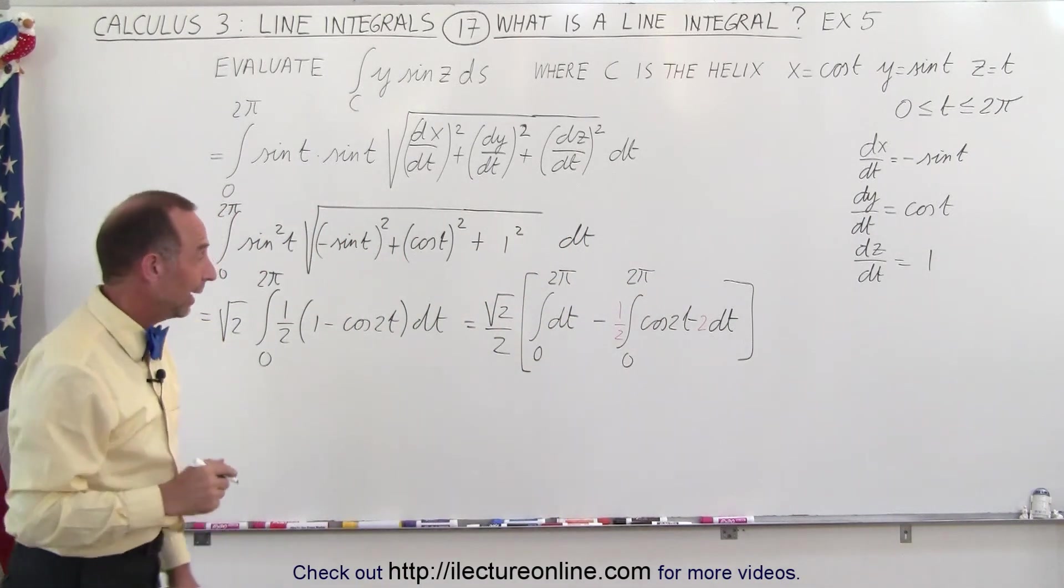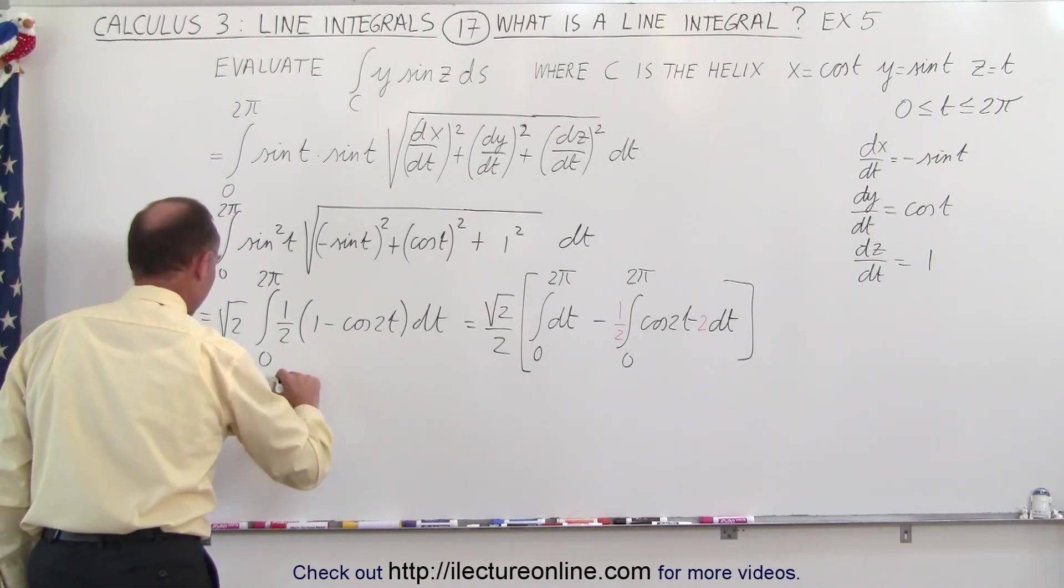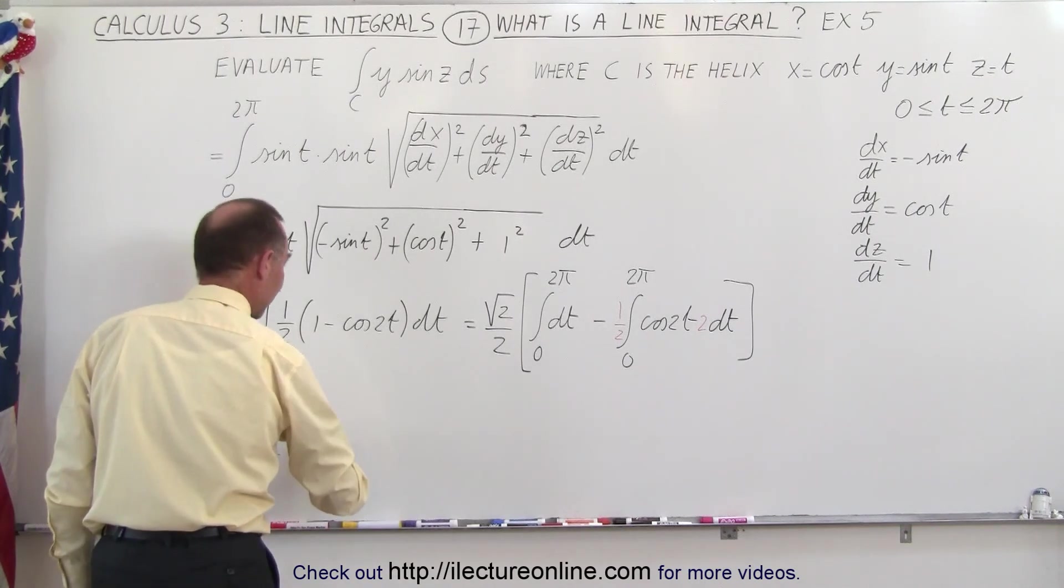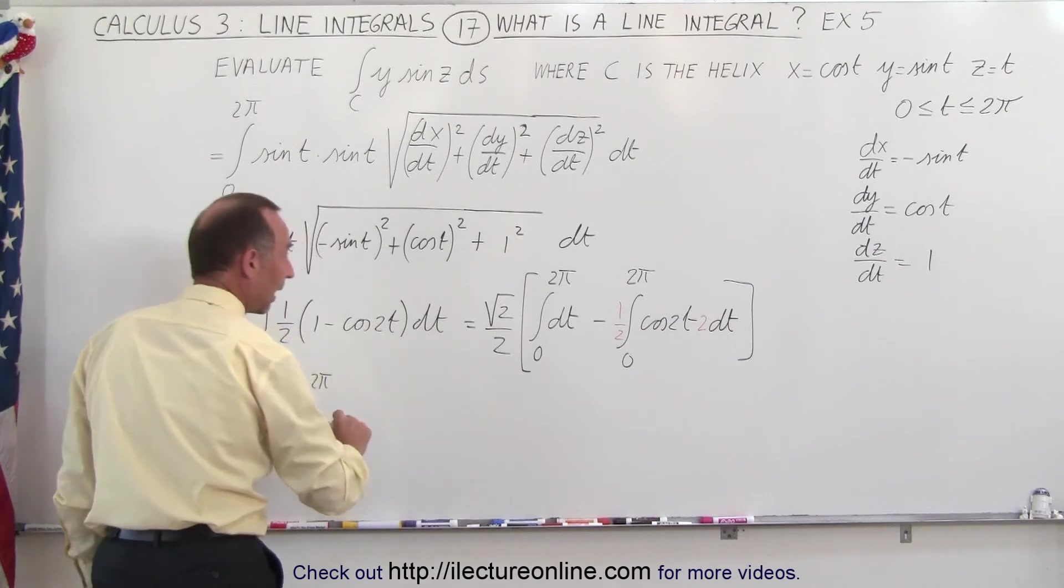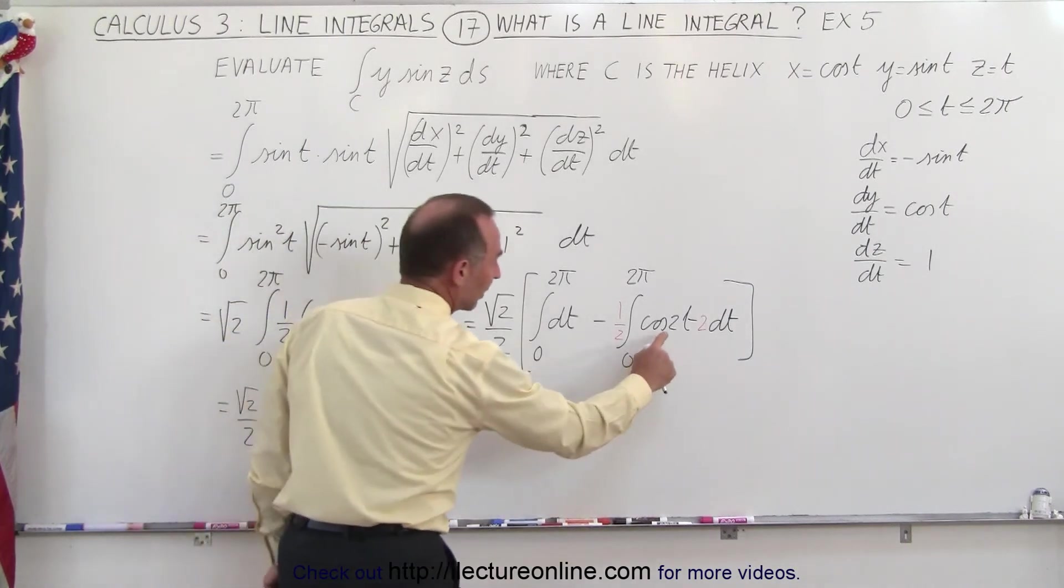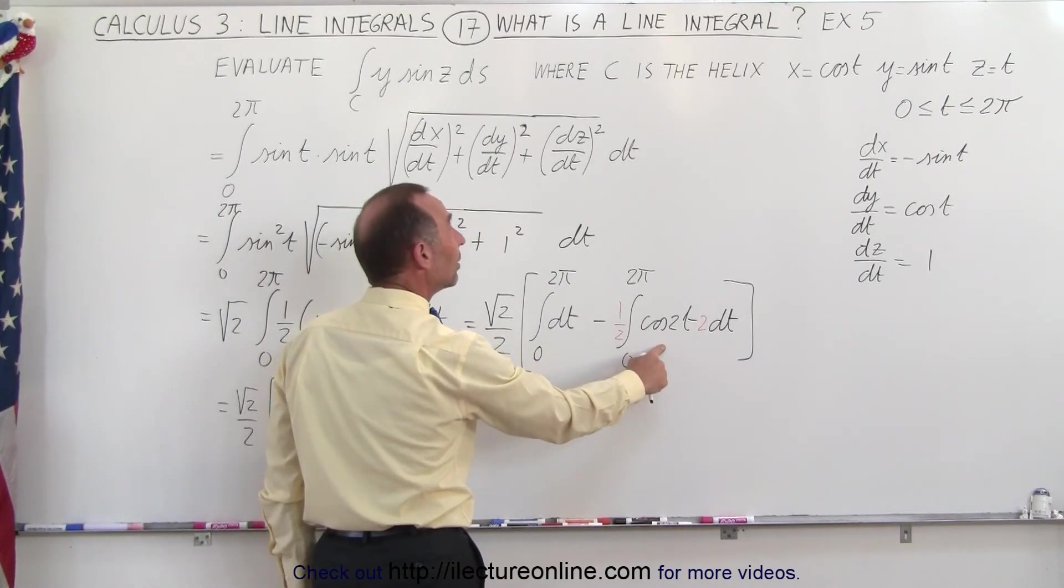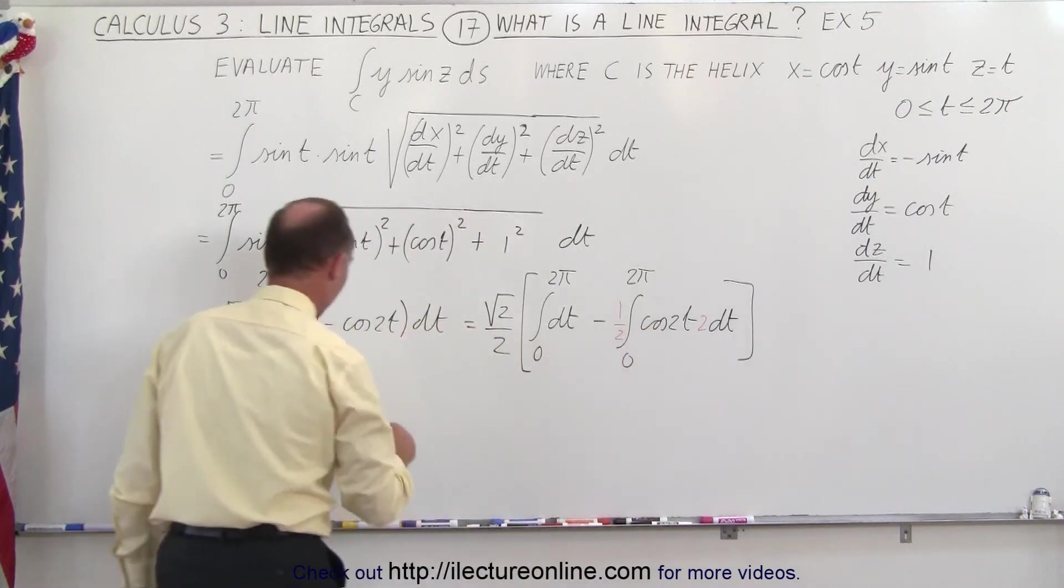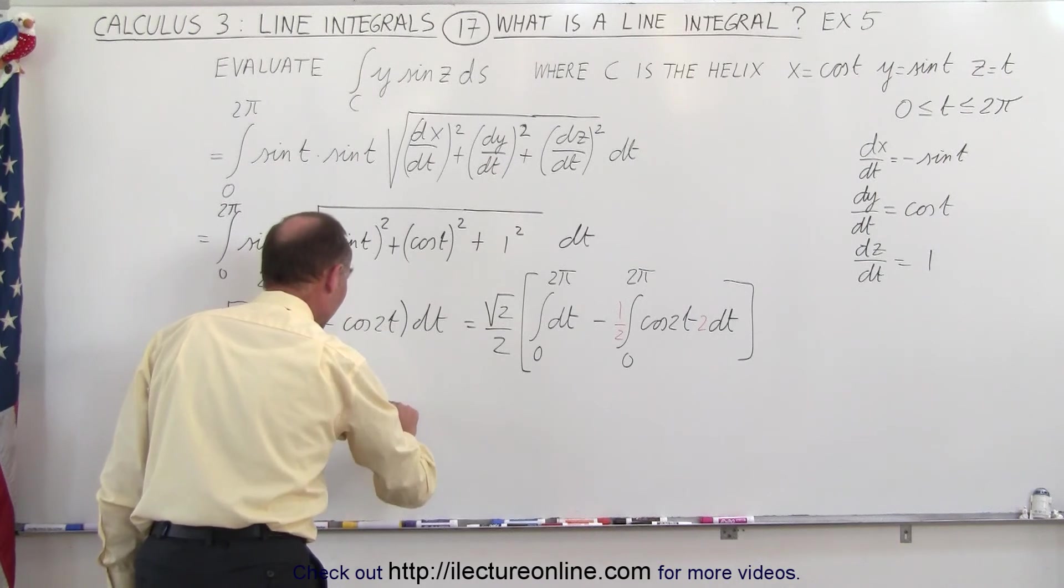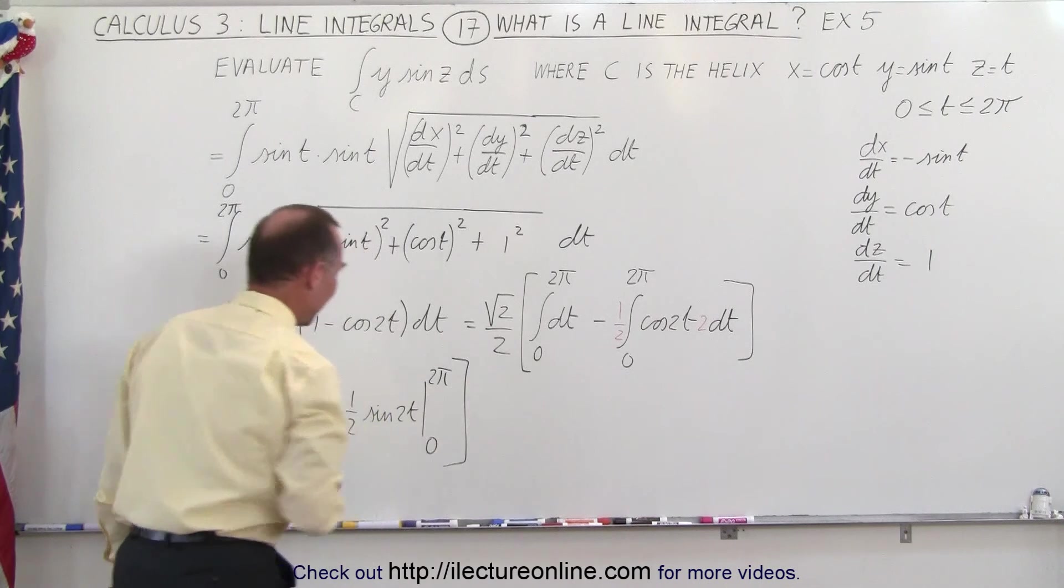So now we can go ahead and integrate those, so this becomes equal to the square root of 2 over 2 times, so here we have t evaluated from 0 to 2π, and then we have minus 1/2 times the integral of cosine. Let's see here, the derivative of sine is the cosine, so the integral of cosine is the positive sine, so the minus stays intact, so minus 1/2 times the sine of 2t evaluated from 0 to 2π, like that.